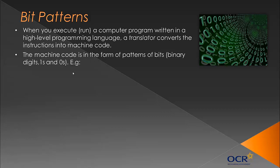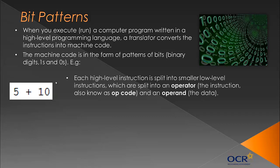For example — you don't need to memorise this specific processor representation — here we have a Python instruction: 5 plus 10. The computer doesn't understand that because it only understands binary, so it must convert it. Each high-level instruction is split into smaller low-level instructions in the form of machine code. These are split into an operator — the instruction, also called an opcode — and an operand, which is essentially the data. In the example 5+10, the plus sign is the operator and 5 and 10 are the operands.